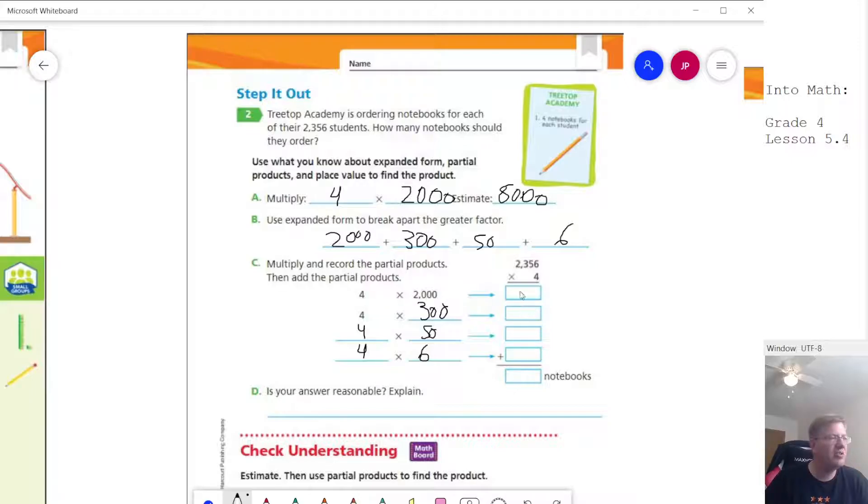So 4 times 2000 would give us 8,000. 4 times 300 would give us 1200. 4 times 50 gives us 200. And then 4 times 6 gives us 24.